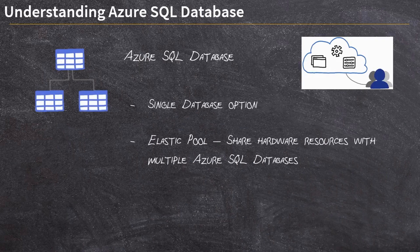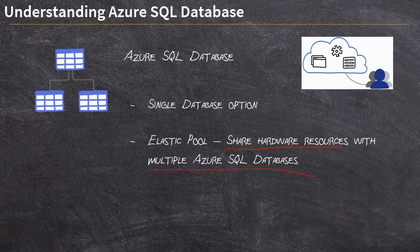There are two basic options for deploying an Azure SQL Database: the single database option and something called Elastic Pool. These are largely the same. The difference is with the Elastic Pool, you are sharing hardware resources with multiple Azure SQL Databases. There is a distinction, even in Azure SQL as a platform-as-a-service, between the infrastructure platform and the software platform — the actual database itself. You can deploy multiple databases into a single hardware infrastructure platform in something known as an Elastic Pool.